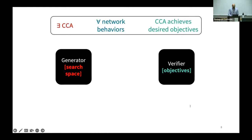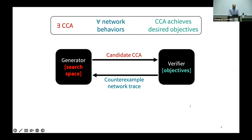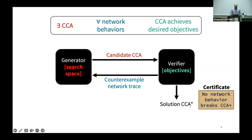CGIS consists of iterative interaction between a generator and a verifier. The generator proposes a candidate congestion control algorithm from a search space. Then the verifier checks if this candidate meets the desired objectives. If not, the verifier produces a counterexample network trace where the candidate algorithm witnesses poor performance. Based on this, the generator prunes its search space and proposes a new candidate. Eventually, if the verifier cannot find a counterexample, we have the solution CCA — a certificate that no network behavior can break the CCA.